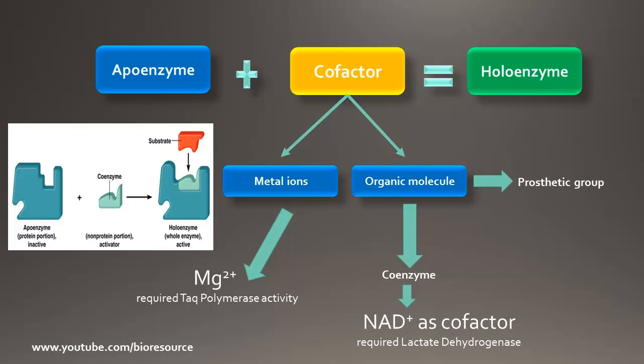The cofactor can be subdivided into two groups: metal ions and small organic molecules. For example, the enzyme Taq DNA polymerase requires magnesium ions for its activity, whereas lactate dehydrogenase requires the small organic molecule nicotinamide adenine dinucleotide.